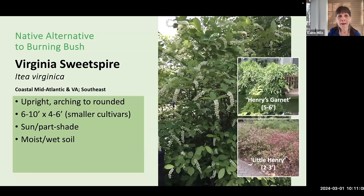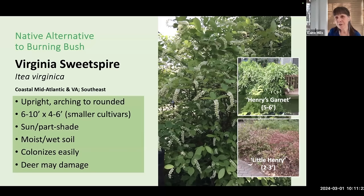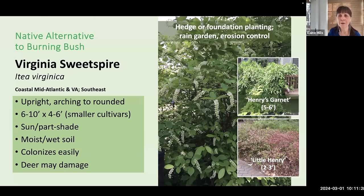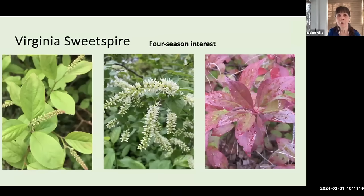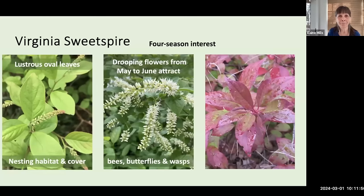Virginia Sweetspire grows in sun to part shade and prefers moist to wet soil. It colonizes easily, sending out runners, which makes it quite useful as a hedge or for foundation plantings. Because of its preference for moist to wet soil, it's also well suited to rain gardens and slopes for erosion control. It has lustrous oval leaves providing nesting habitat and cover, lovely drooping flower clusters from May to June attracting bees, butterflies, and wasps, flaming fall color that rivals a burning bush, and lingering fruit into winter for birds.